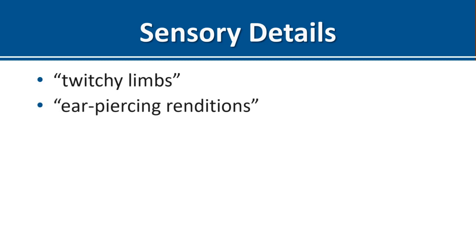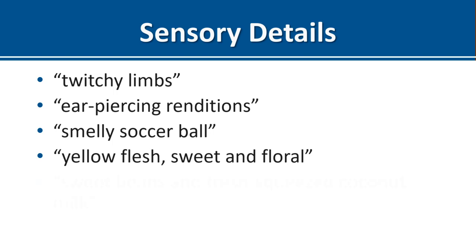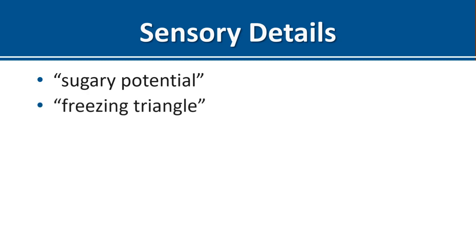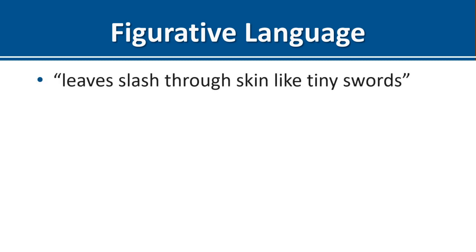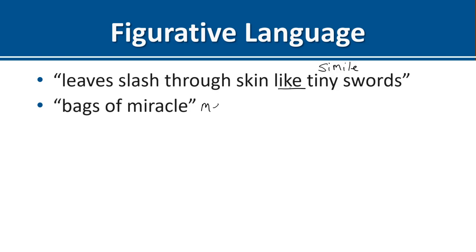One really effective thing Lai does is include sensory details that help us picture and experience along with her. She describes her twitchy limbs, the ear-piercing renditions, a smelly soccer ball, yellow flesh sweet and floral, sweet beans and fresh-squeezed coconut milk. There's also figurative language — 'leaves slashed through skin like tiny swords' is a simile, using the word like. She describes one of the snacks as 'bags of miracle,' which is a metaphor — a comparison without like or as. Both are examples of figurative language.